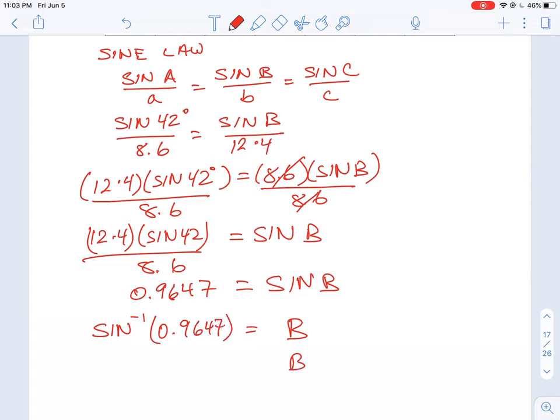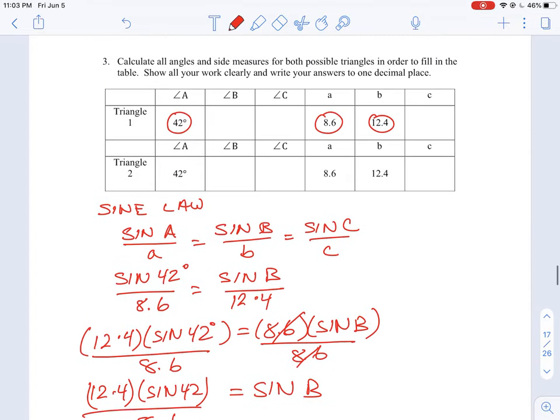And this is going to be what angle B is equal to. And then this is going to give us 74.8 degrees. So that gives us one of the missing angles here, 74.8.